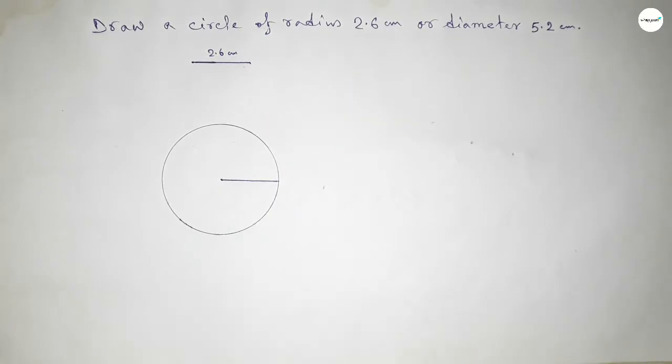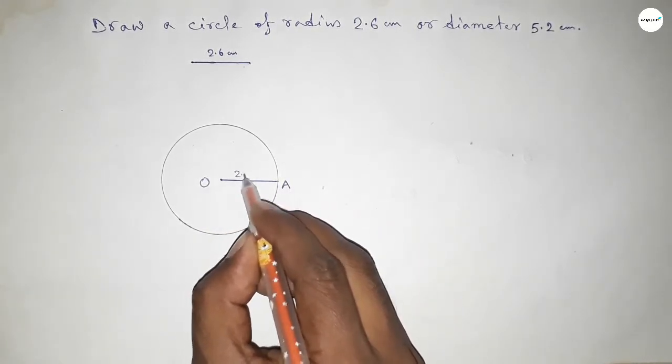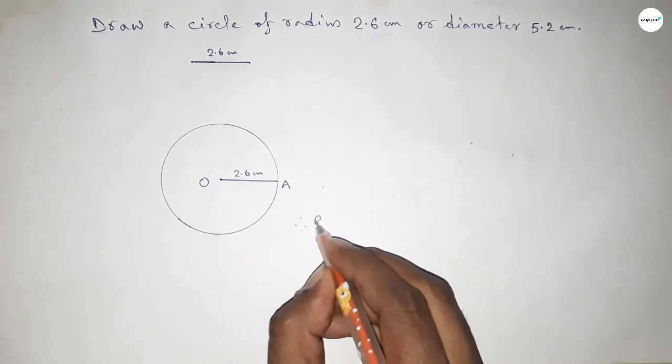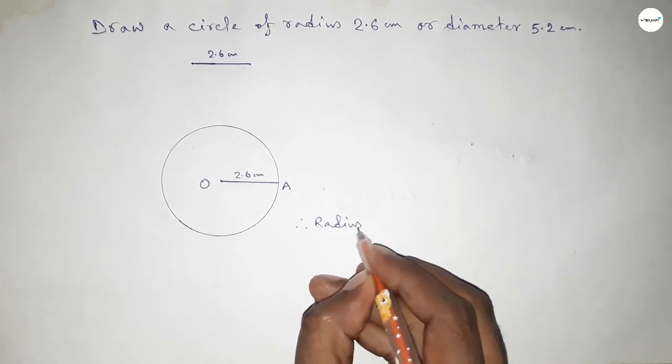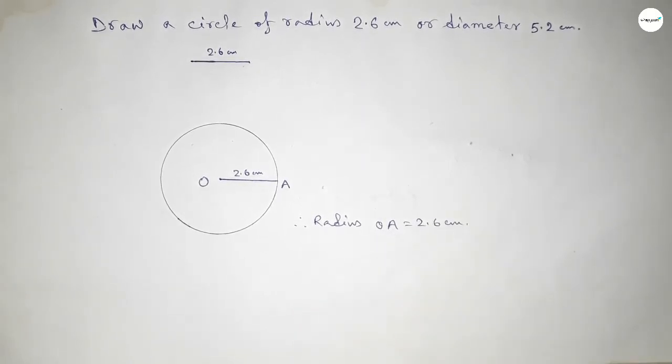Okay, so taking here the center O and here a point A, so OA equals 2.6 centimeter. Therefore, radius OA equals 2.6 centimeter. That's all. Thanks for watching. If this video is helpful to you, then please share it.